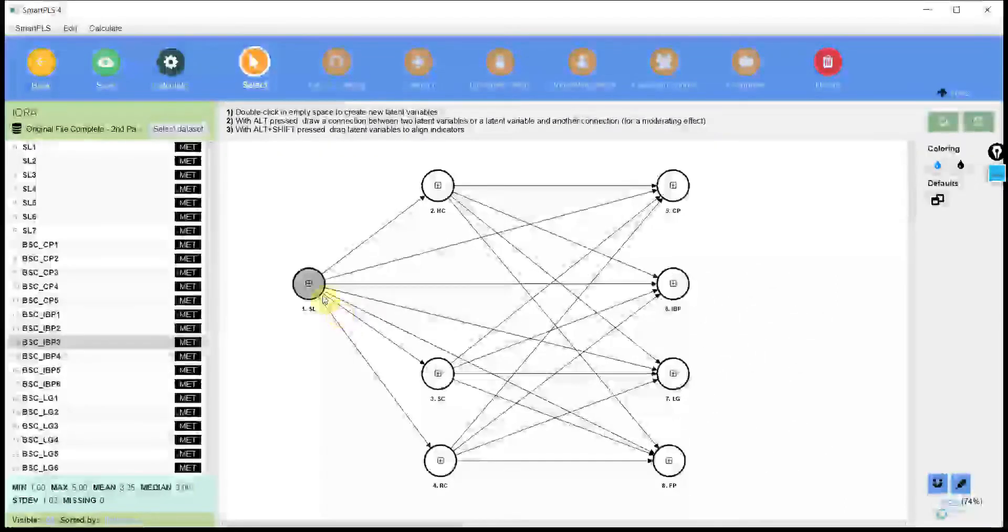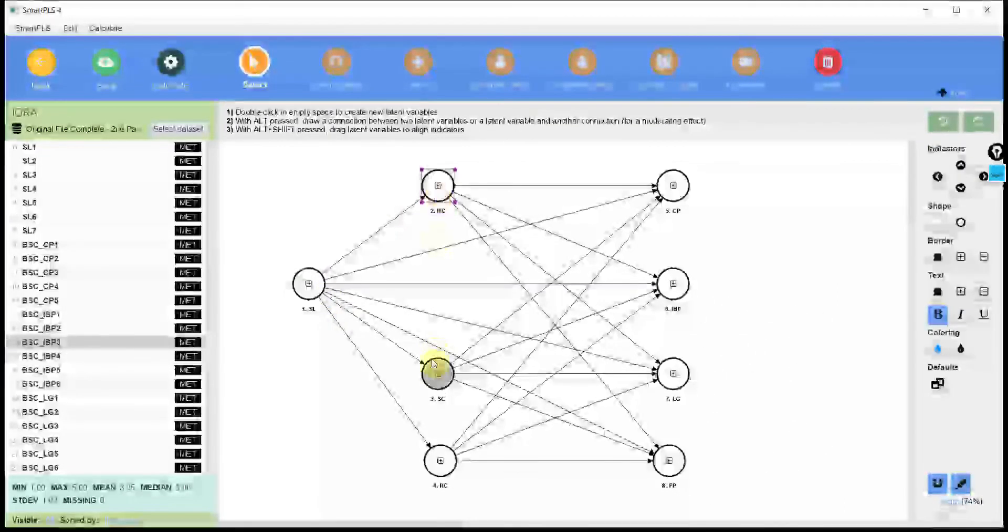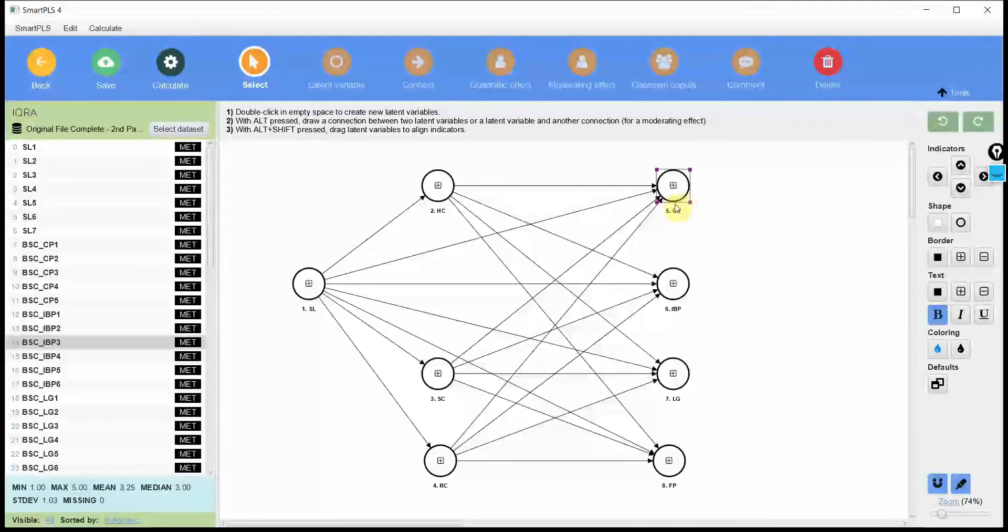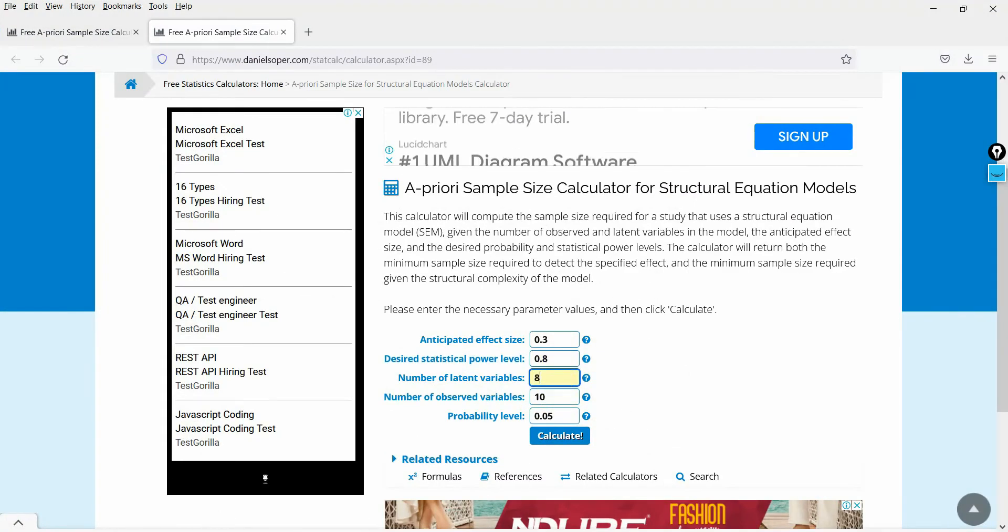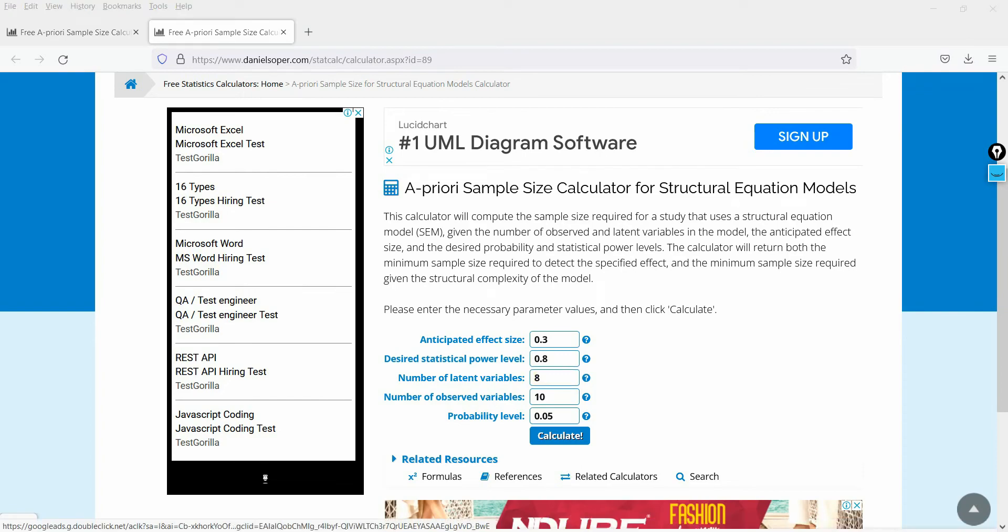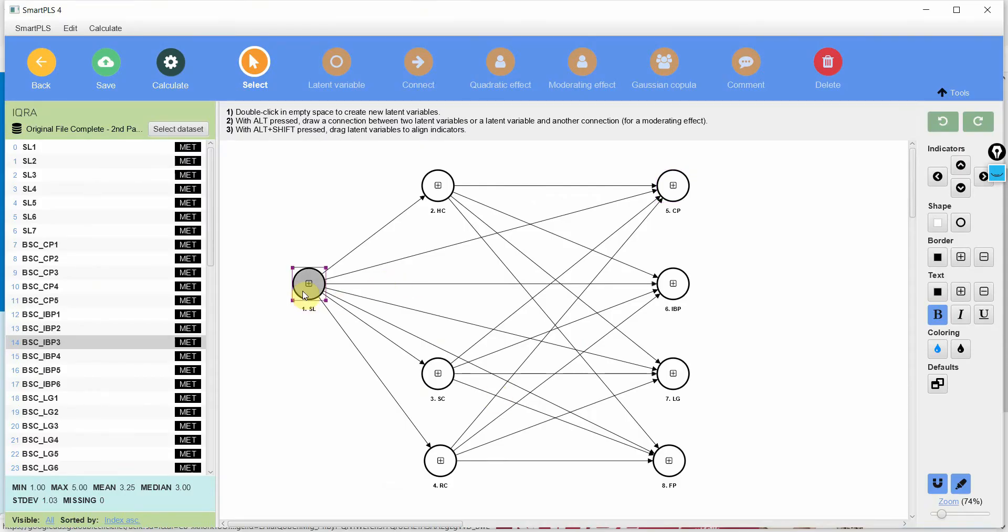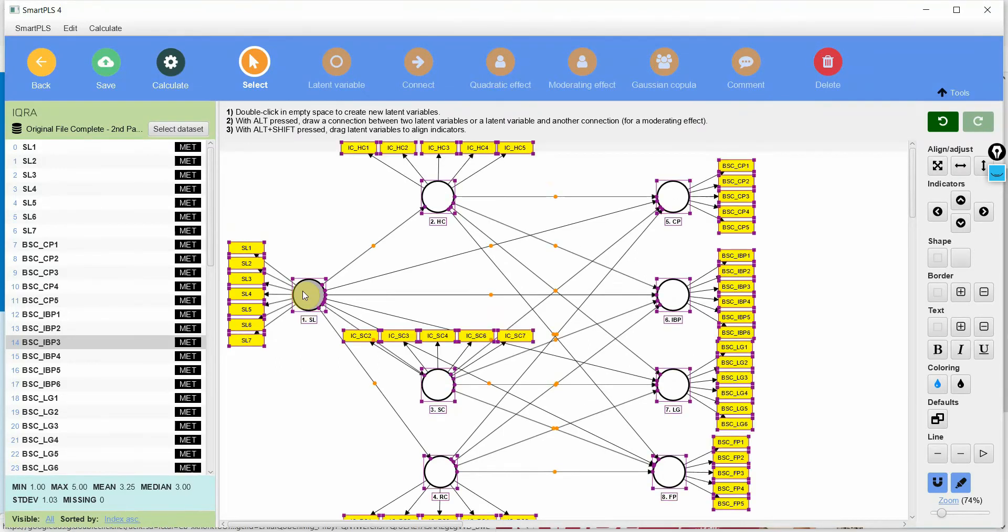Now in this case I've got 1, 2, 3, 4, 5, 6, 7 and 8. So 8 latent variables, unobserved variables and how are they observed? They are observed based on the indicators you have. These are your indicators. So let's say if I calculate it.